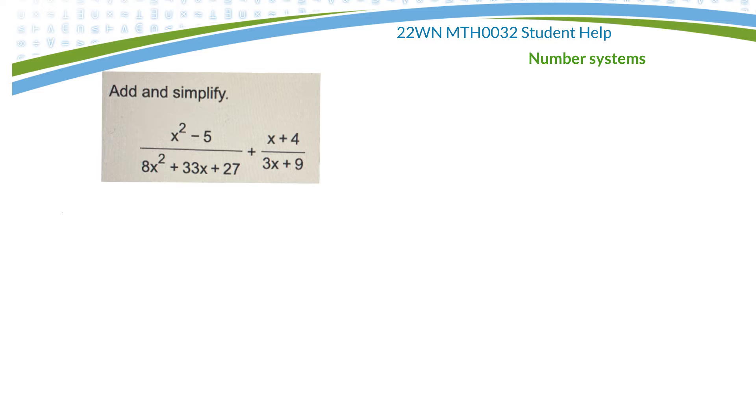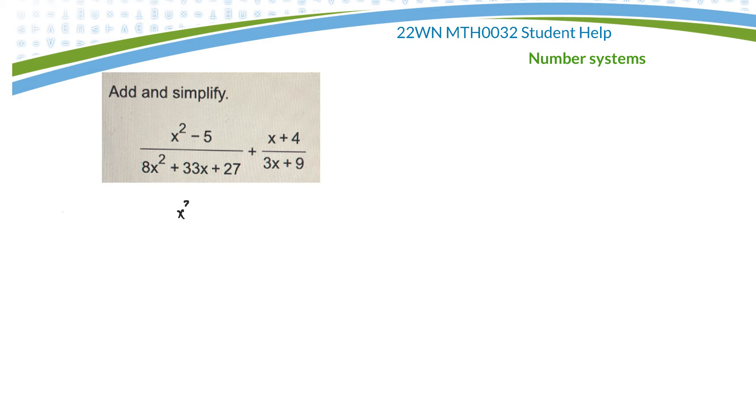And so here, there's a little bit of factoring involved. So I'm going to leave the top the same, x squared minus 5. The bottom, I'm going to try and break it into two brackets. The top of this one, I'll leave the same.